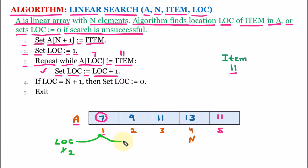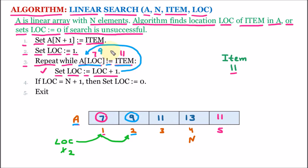LOC is shifted to the next position. It is a loop, so it goes back and again checks the condition: A[LOC], and since the location is now 2, A[2] is 9. So here we are checking 9 not equal to item — item is still 11. Since 9 ≠ 11 is true, the inner part works again and LOC is incremented to 3.